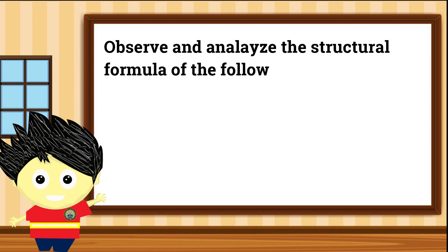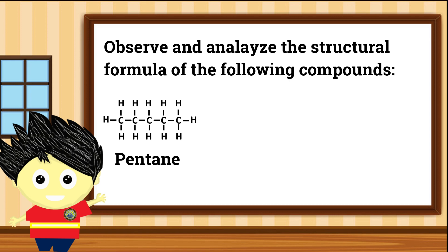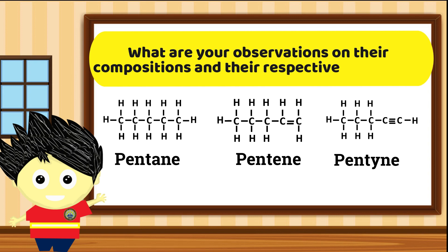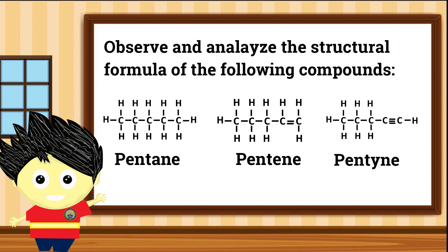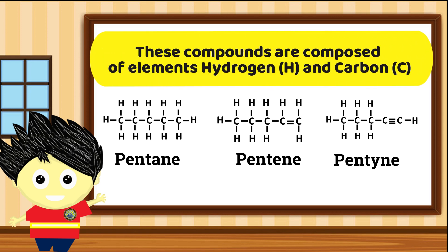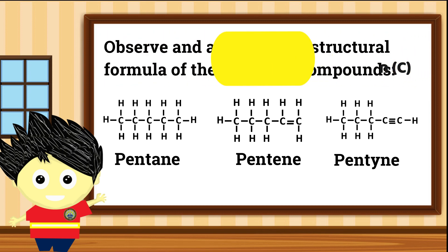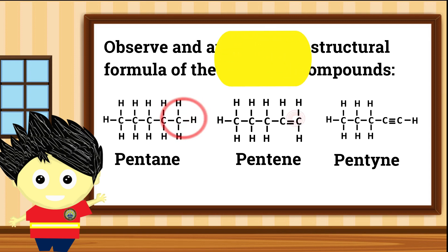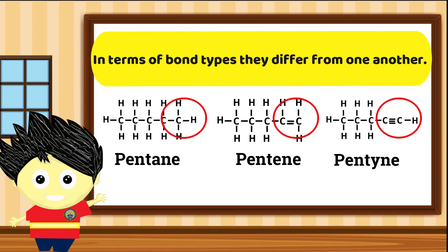Pansinin at suriing mabuti ang mga sumusunod na structural formula ng mga sumusunod na compounds. Narito ang pentane, pentene, at pentyne. May napapansin ba kayo sa kanilang compositions maging sa forma nito? Tama! Mapapansin natin na ang mga compounds na ito ay pare-parehong binubuo ng mga elements na carbon at hydrogen. Bukod dito, mapapansin din natin na pagdating sa presence ng bond types, dito sila nagkaroon ng pagkakaiba.